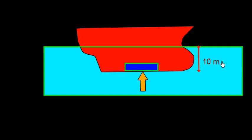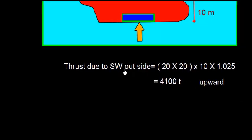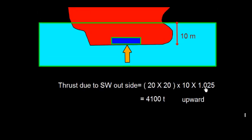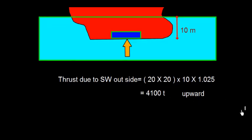So the thrust due to salt water outside is going to be area, which is 20 into 20 into H, 10 meter here, and 1.025. Well, this will act in upward direction.